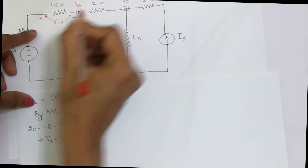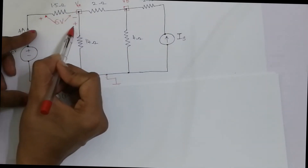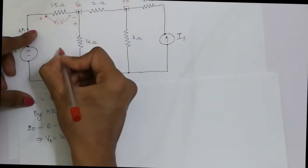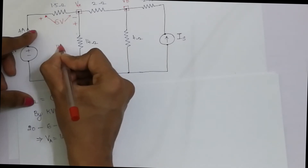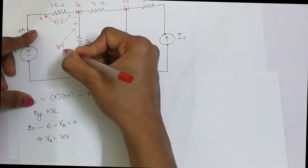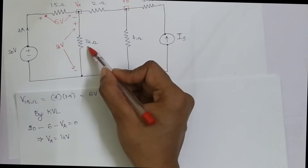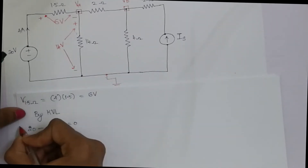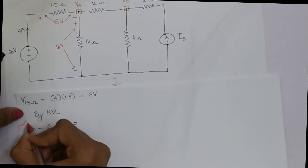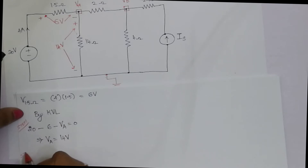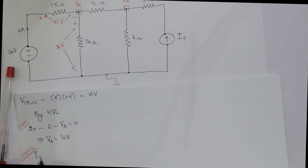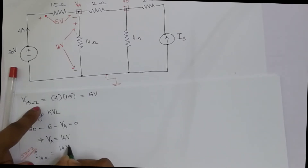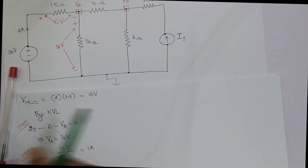This is the direction of current absorption, so I am considering this terminal as plus and this as minus, with 14 volts across it. By Ohm's law, current equals voltage divided by resistance. The current through the 14-ohm resistor is going to be 14 volts divided by 14 ohms. The current is 1 ampere.